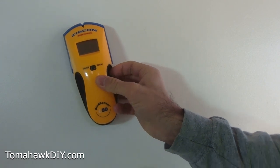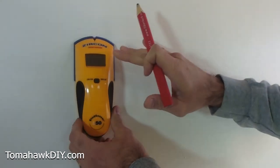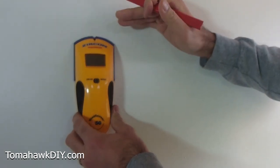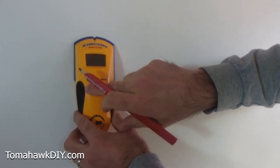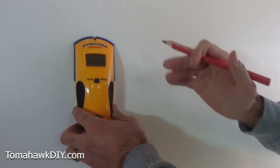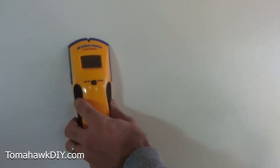I'll include a link on Amazon where you can pick this up. There's lots of different makes and models. This is not the very lowest end. It's a little bit higher, which I like because it's got a deep scan and a stud scan. It has a couple different options.